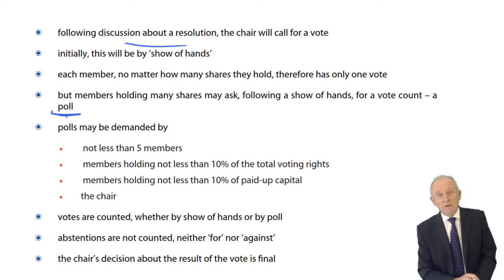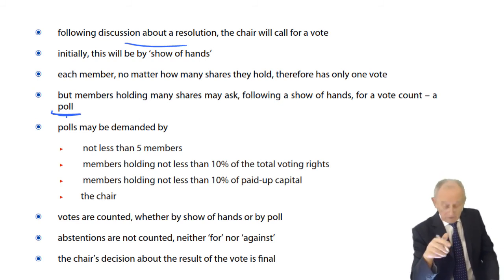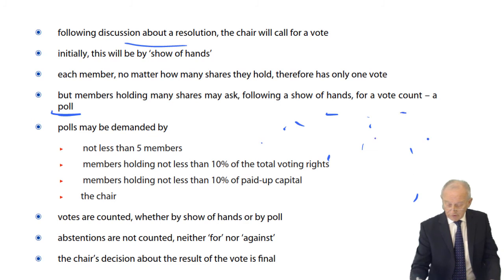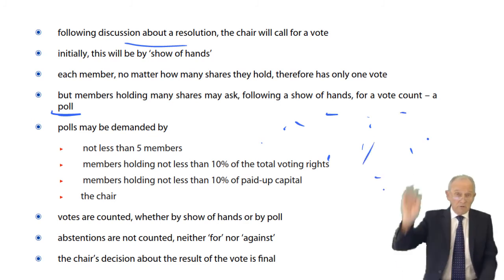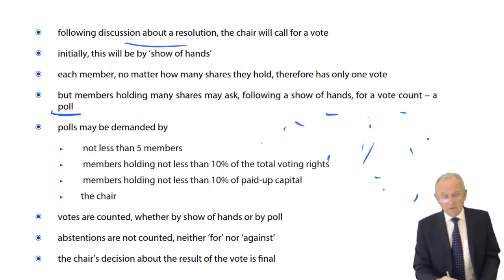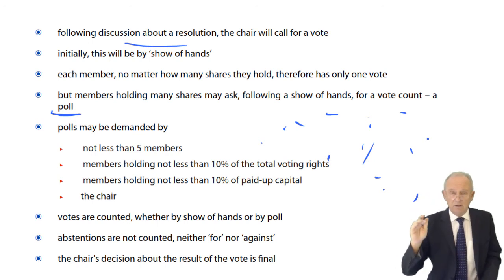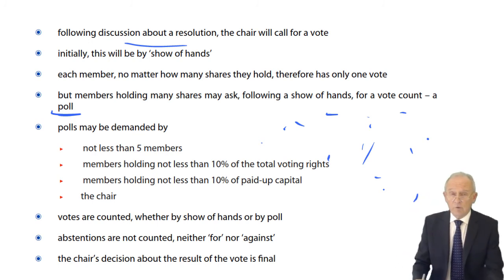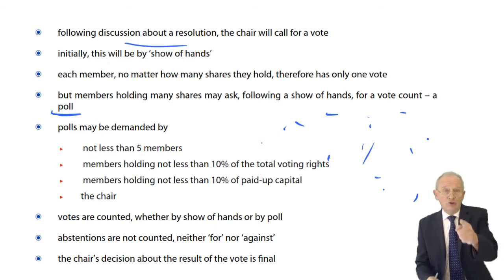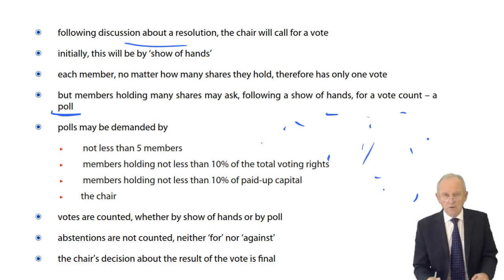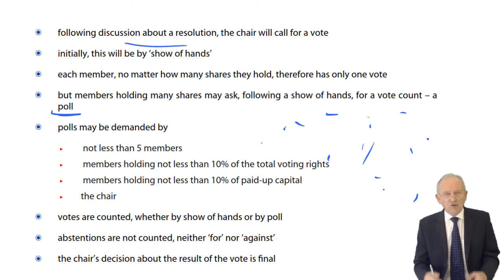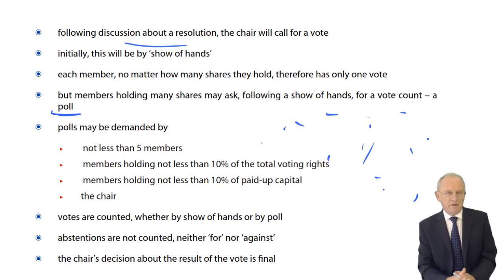In a show of hands, a person holding 3,000 shares and 3,000 votes has only one hand — the same as a person holding 10 shares. That's not fair, so a member with 3,000 votes can ask the chair for a poll — a vote count. Scrutineers, employees of the company, go out into the audience to count votes in favour and votes against.